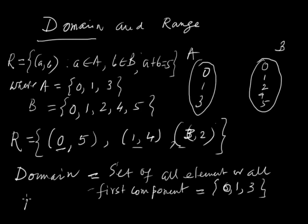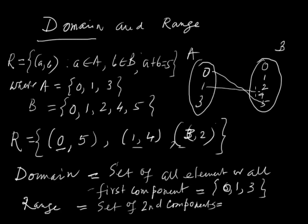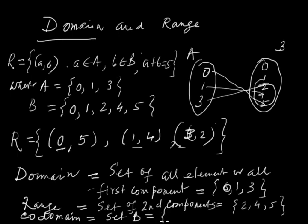And the range is the set of all second components. We have found (0,5), (1,4), (3,2), so only these three elements belong to the range. This equals 2, 4, 5. And set B is called co-domain: 0, 1, 2, 4, 5. You see the range is a subset of co-domain.